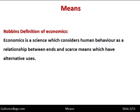In this video we're going to deal with means. We get this term from Robbins' definition of economics — an extremely famous definition, one well worth committing to memory. It says that economics is a science which considers human behavior as a relationship between ends and scarce means which have alternative uses.